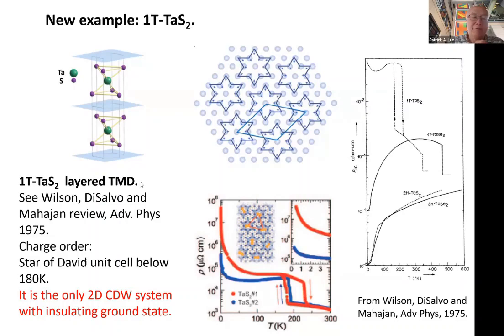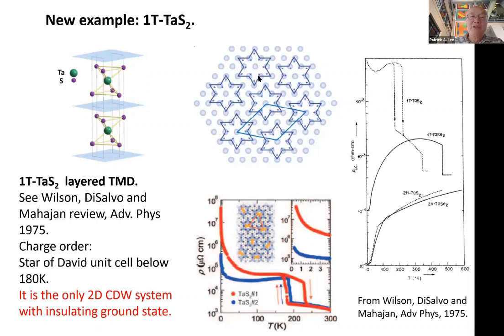The TMD system very often has a charge density wave distortion. This particular one has a famous 'Star of David' distortion below 180 Kelvin, where atoms move inward toward the middle forming a cluster. Importantly, there are 13 sites in the Star of David — 13 is odd — so there are 13 electrons per unit cell. You can imagine 12 are paired up and one is left over, making this a Mott insulator.